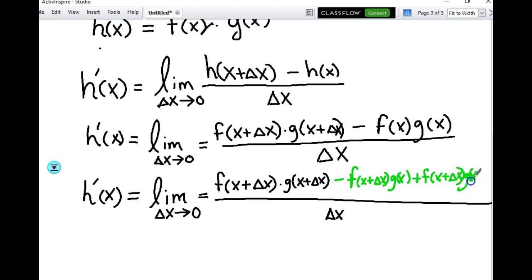So, as you guys can see, I've subtracted f of x plus delta x times g of x, and I've added f of x plus delta x times g of x, which means that green part there, since I'm adding, it's retracted the same amount, is actually zero.